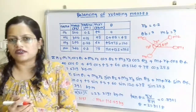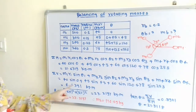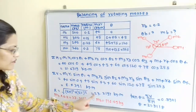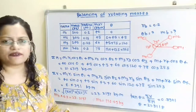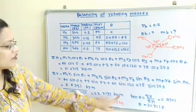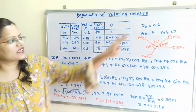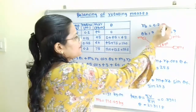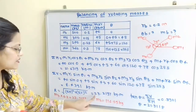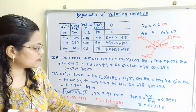Now we find the resultant: √(ΣH² + ΣV²) = √(21.63² + 8.43²) = 23.2197 kg·m. Since the balancing mass radius of rotation RB = 0.2 m, we have MB × RB = 23.2197, so MB = 23.2197 / 0.2 = 116.09 kg.